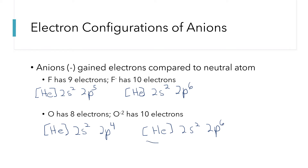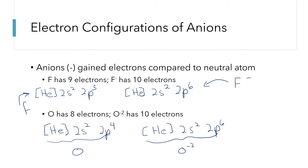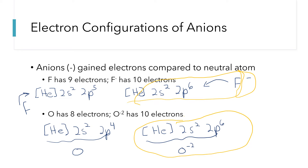That configuration is for oxygen with a minus two charge. The neutral oxygen configuration has 2p4. Up above, this one is for neutral fluorine, and the one on the right is for the fluoride ion. As we noted for fluoride and oxide, they end up with the same number of electrons arranged in the exact same pattern. Species that have the same electron configuration are called isoelectronic — iso means the same, so isoelectronic means they have the same arrangement of electrons.